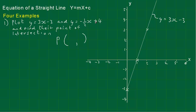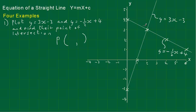Now the second line, y equals minus a half x plus 4. The intercept is 4, so pop that there. When we go along 1 on the x we go down a half on the y. Along 1 down a half, along 1 down a half — so if we go along 2 we go down 1. Put that line in and label it y equals minus a half x plus 4. There's our intersection point P, and that is at x equals 2, y equals 3.